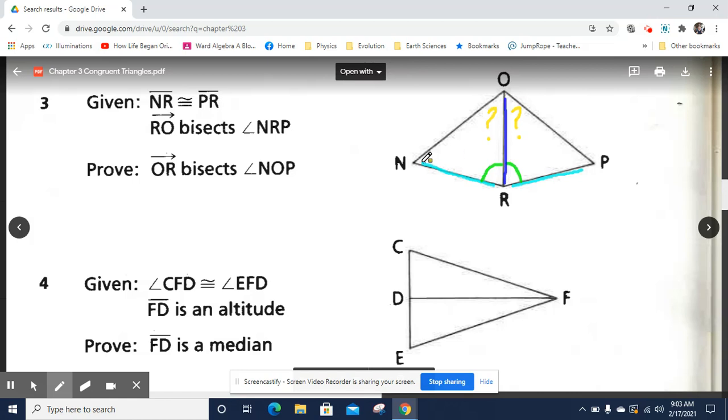Because you already have enough to prove that triangle NRO and triangle PRO are congruent. I'm going to leave the rest to you, and I hope that helped.